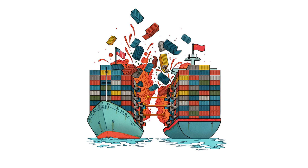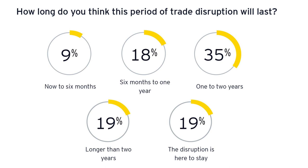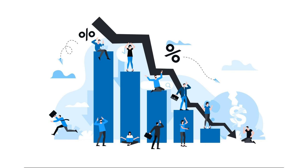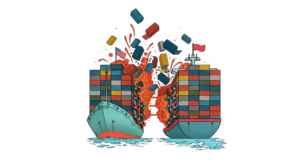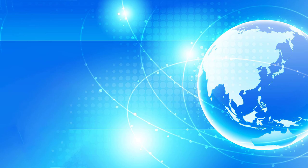The trade war also had a significant impact on the global economy. The tensions between the US and Japan disrupted supply chains and led to a decline in international trade. The global economic slowdown that followed had far-reaching consequences for industries and countries around the world. The trade war between the US and Japan finally came to an end in the mid-1990s, when the two countries reached a series of agreements aimed at reducing trade barriers and opening up markets, helping to ease tensions and restore diplomatic relations.